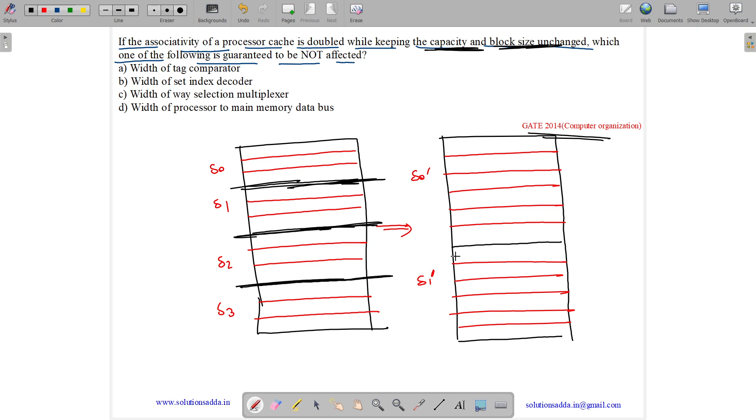Now let us see the options one by one. So option A says width of tag comparator. See, why is the tag comparator being used? So initially, here only three blocks can come to a particular set. So if we get to know that a particular block can be present in some set, then over there we have to just make three comparisons. But now in a particular set, we need to make more comparisons. So there are more possibilities to choose from. So width of tag comparator will increase. And it is saying which will not get affected, it will increase, so this is not the option.